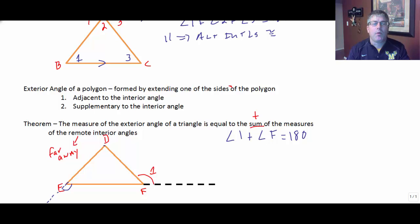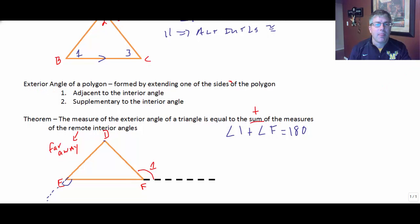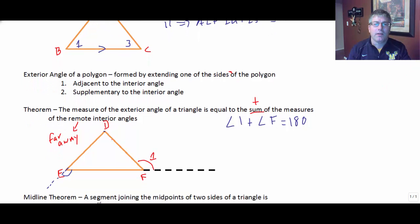Okay, when you go to the airport, you park in remote parking. You're parking far away from the terminal. That's why it's not very expensive. But we are working at the remote angle. So like angle D and angle F would be the remote interior angles relative to angle 1.